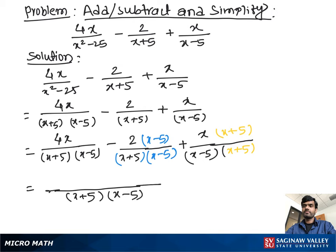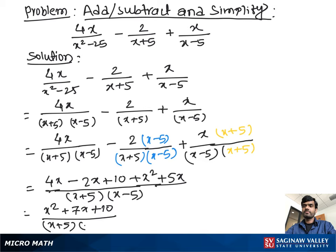We have 4x. Then we do the distributive property: minus 2x plus 10, plus x squared plus 5x. Now we simplify in the numerator part. We can write x squared plus 7x. 4x plus 5x is 9x, minus 2x is 7x, plus 10, over x plus 5 times x minus 5.